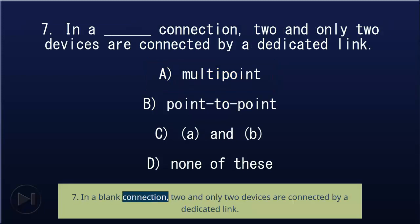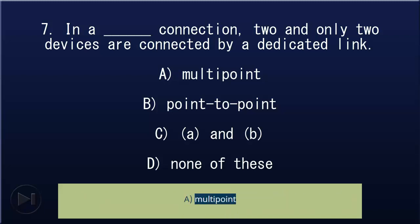7. In a blank connection, two and only two devices are connected by a dedicated link: A) multipoint, B) point-to-point, C) A and B, D) none of these. Answer: B, point-to-point.